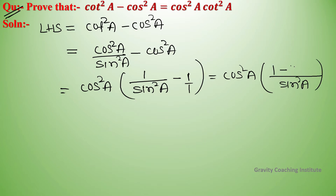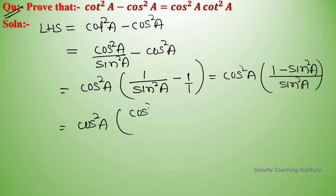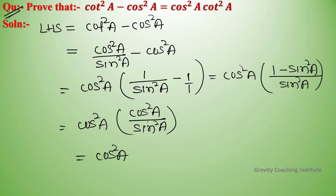This gives cos squared a into 1 minus sin squared a upon sin squared a, which equals cos squared a upon sin squared a, and that equals cot squared a, which is equal to RHS. Hence proved.